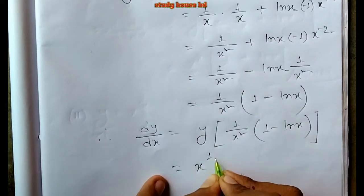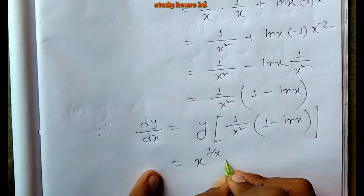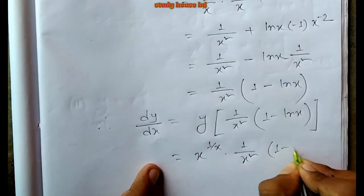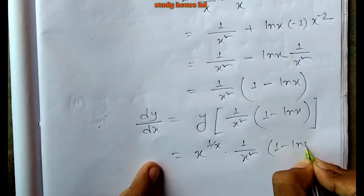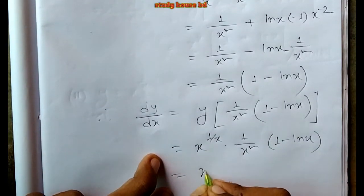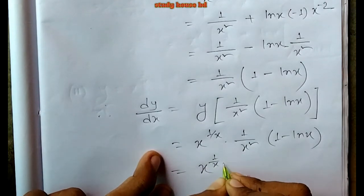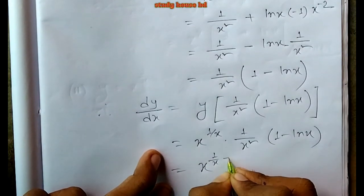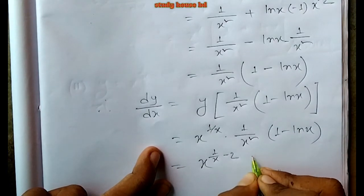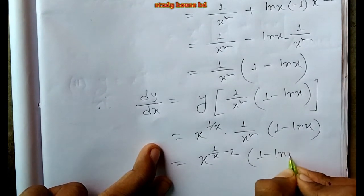Substituting y equals x to the power 1/x back in, the final answer is dy/dx equals x to the power (1/x) times (1 minus ln x) divided by x squared.